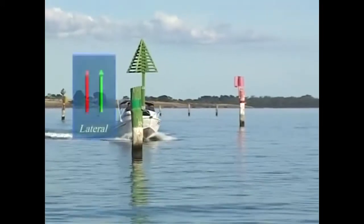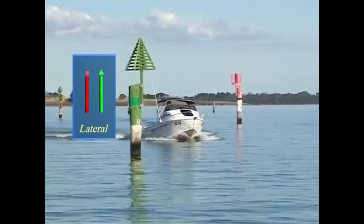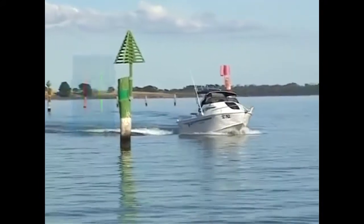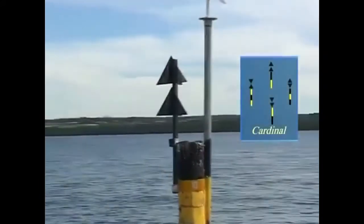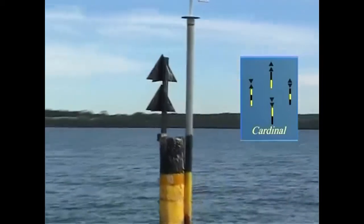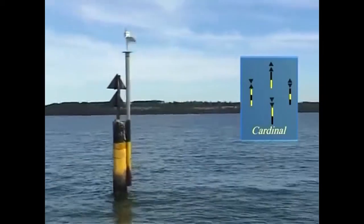The first are lateral marks, which indicate the port and starboard sides of channels. The second are cardinal marks, which indicate the safe side to pass any danger, such as rocks or a bend in the channel.